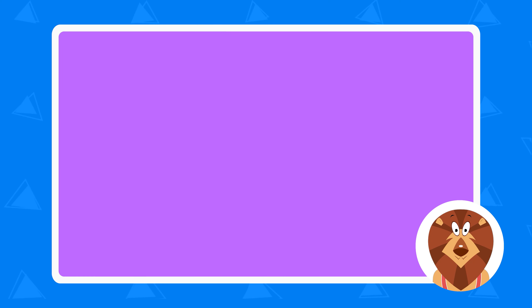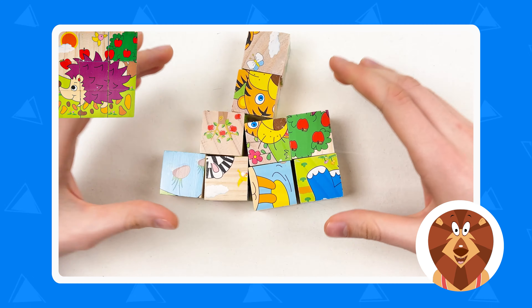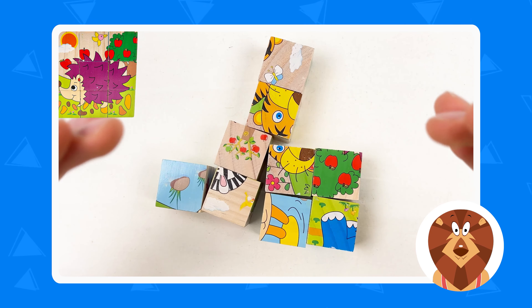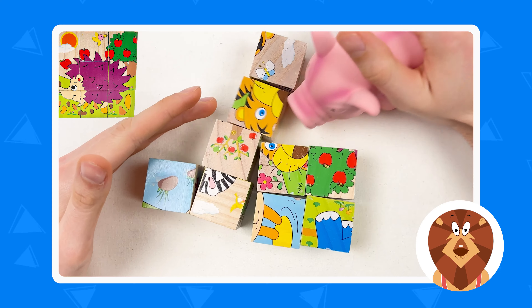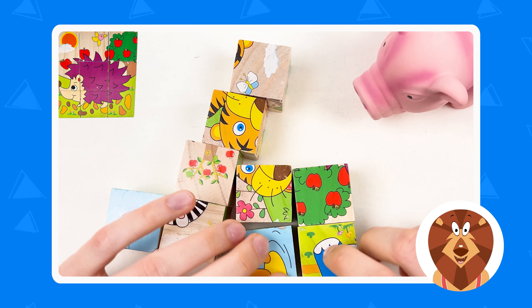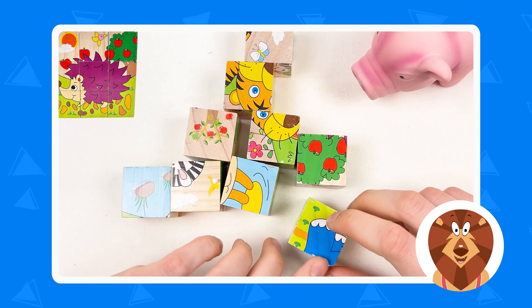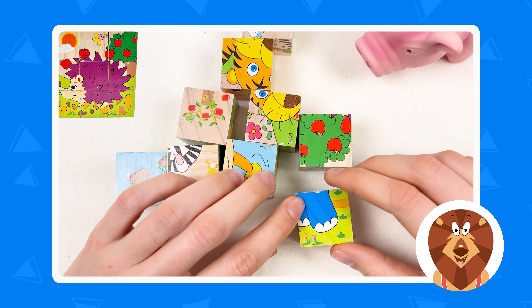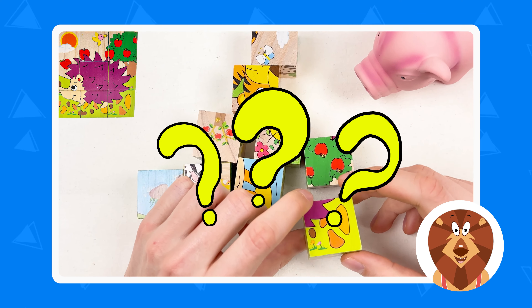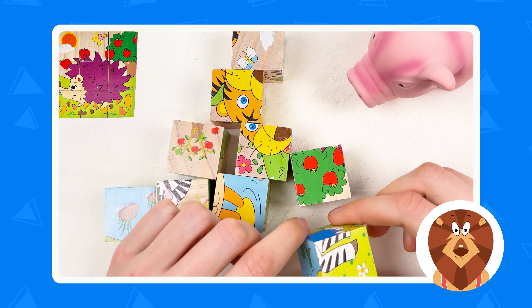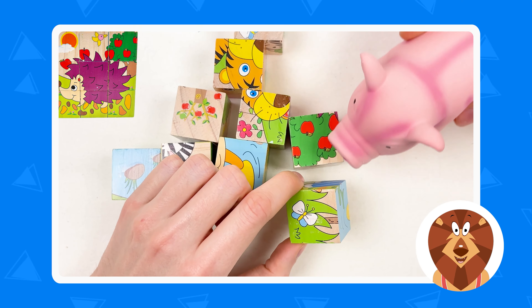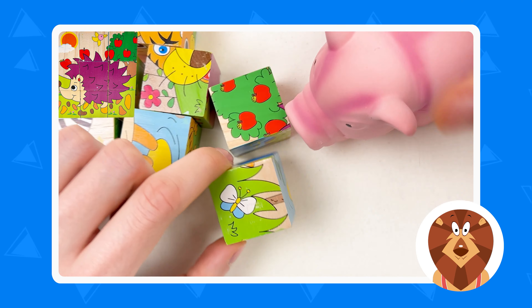Let's start, so let's start with finding the hedgehog, and we have Mr. Pig who's gonna help us. So let's take this cube and rotate, and see if there is the hedgehog, or maybe the part of the hedgehog. And if we can't find it, Mr. Pig is always gonna help us.